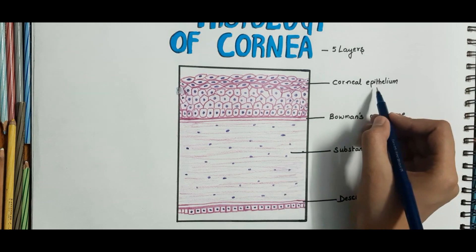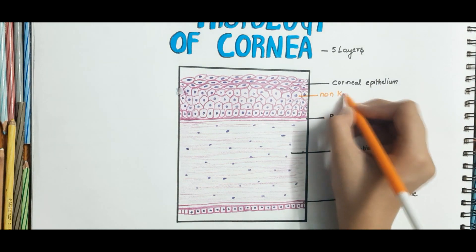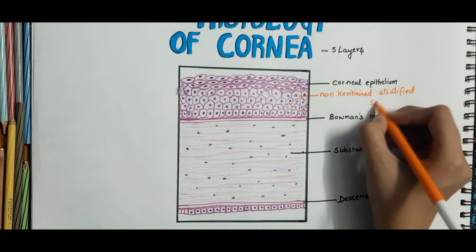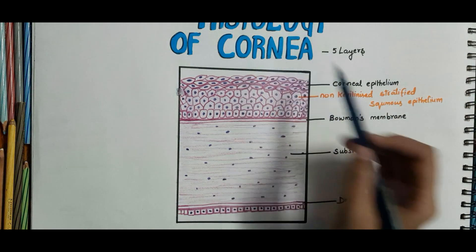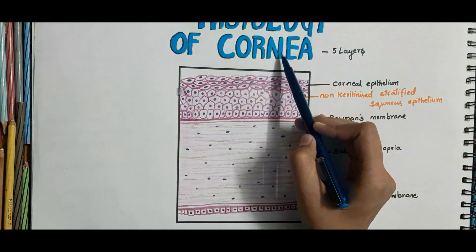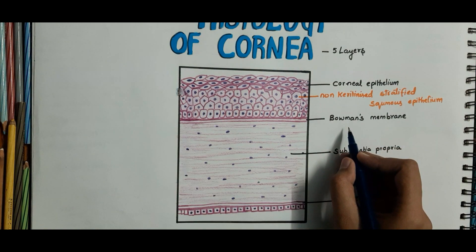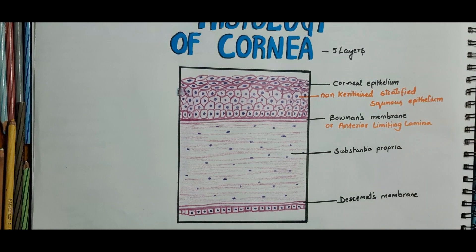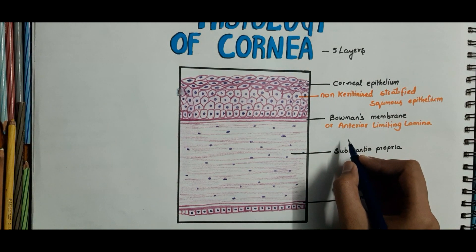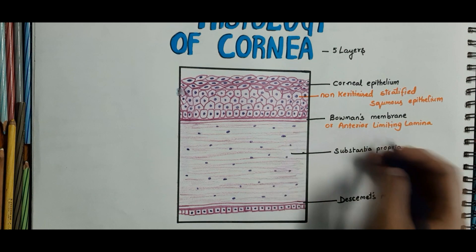The corneal epithelium is made up of non-keratinized stratified squamous epithelium. In the anterior one-sixth of the eyeball, the sclera is replaced by a transparent disc called the cornea. The cornea is a colorless, avascular, transparent structure that has a very rich nerve supply. The second layer, Bowman's membrane or the anterior limiting lamina, is made up of fine collagen fibrils embedded in a matrix. It gives great stability and strength to the cornea.